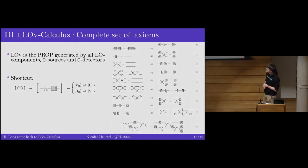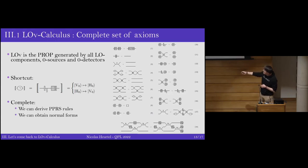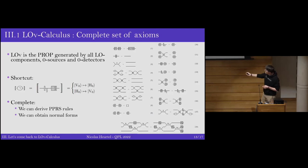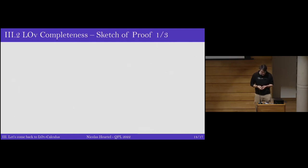The proof structure has two key observations. First, all the rewriting rules of the polarization-preserving fragment can be derived from these 18 equations, including the confluent rule and compositions like phase shifter composition. Second, we use the polarization-preserving fragment to get normal forms for the LOv calculus. So we can use all the properties of the earlier rewriting system within the full LOv proof.